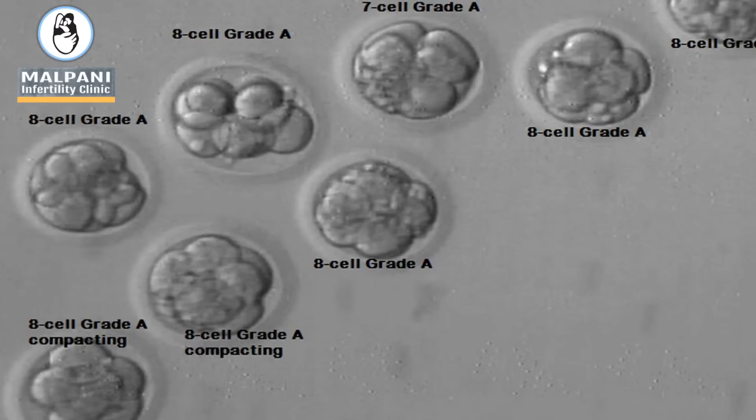Lots of clinics will put back embryos on day three, which is fine — if an embryo is going to become a baby it will whether you put it back on day three or day five. But there are disadvantages, because lots of embryos may look good on day three. They call them eight-cell grade A embryos: you count the number of cells, all cells are clear, equal in size, and there are no fragments. Fragments are small blebs of the cell when it breaks up. So a top quality day three embryo is an eight-cell grade A embryo.